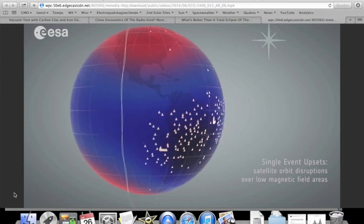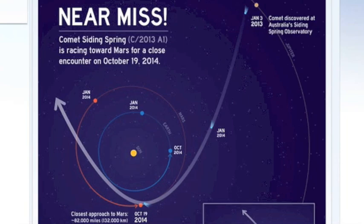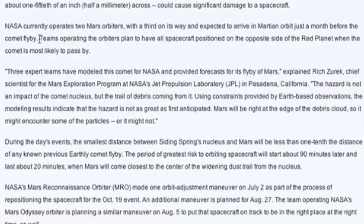Lastly, NASA is preparing for the arrival of Siding Spring, trying to protect the orbiters and aim to have them on the opposite side of Mars for the comet's flyby.